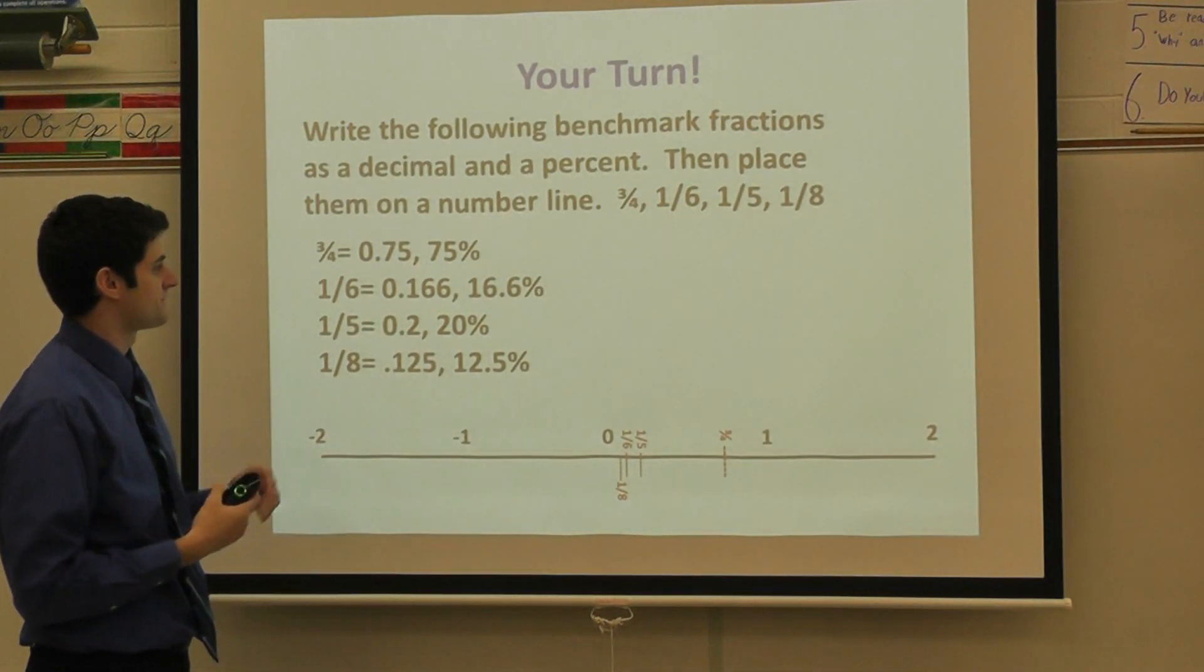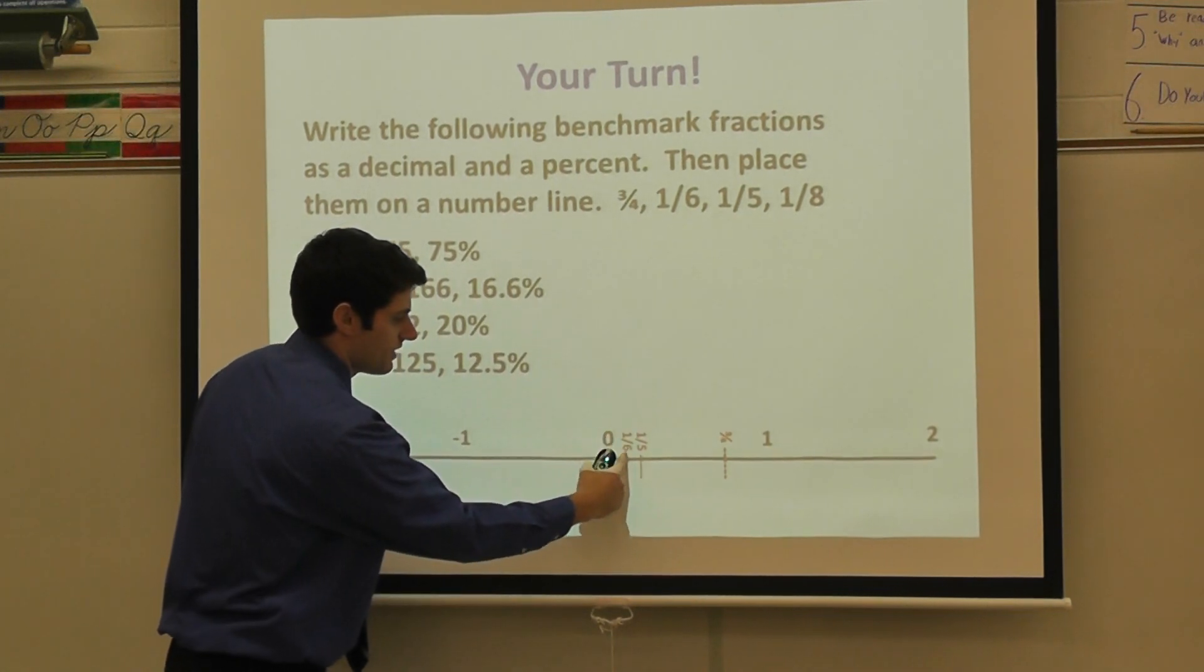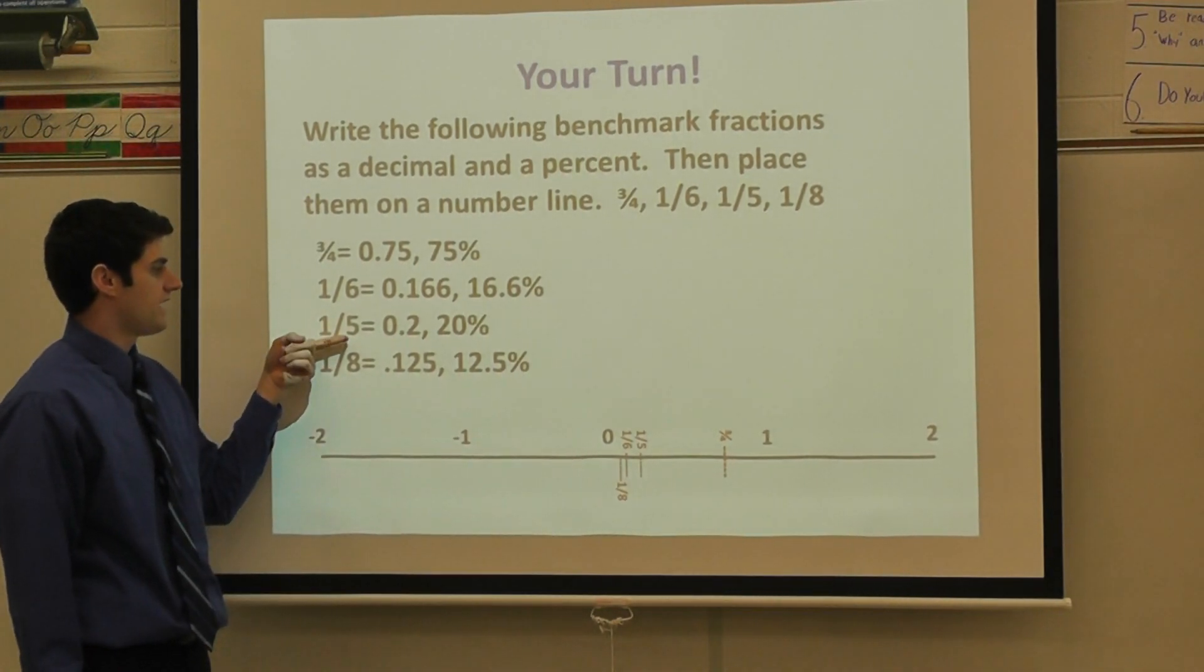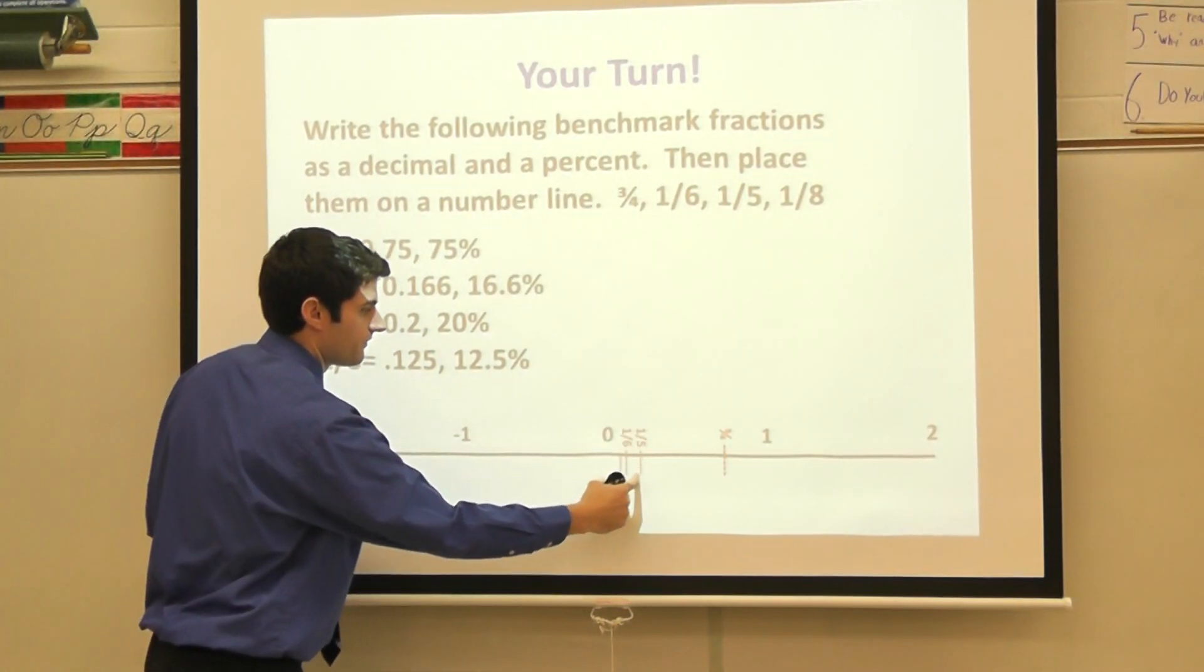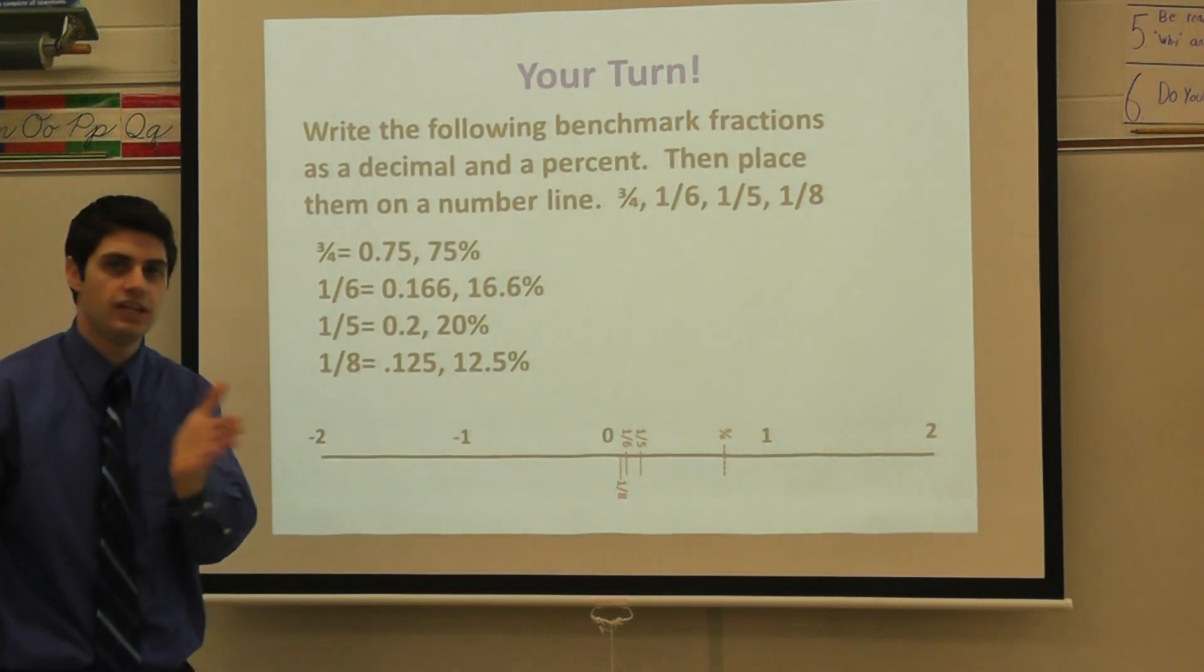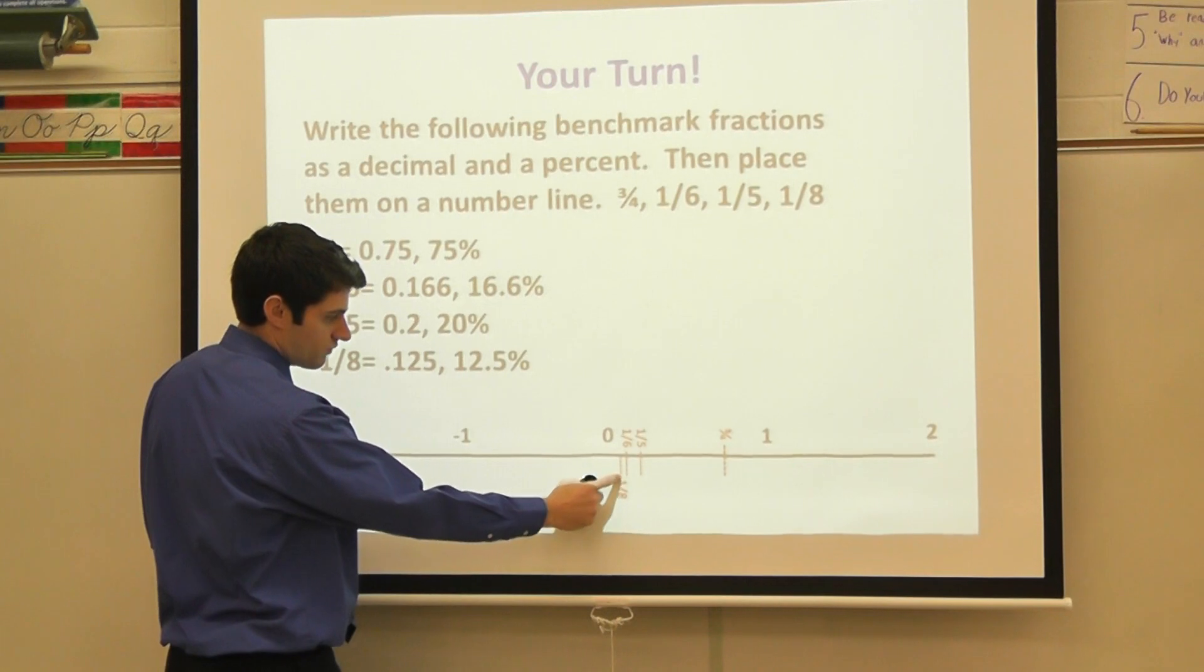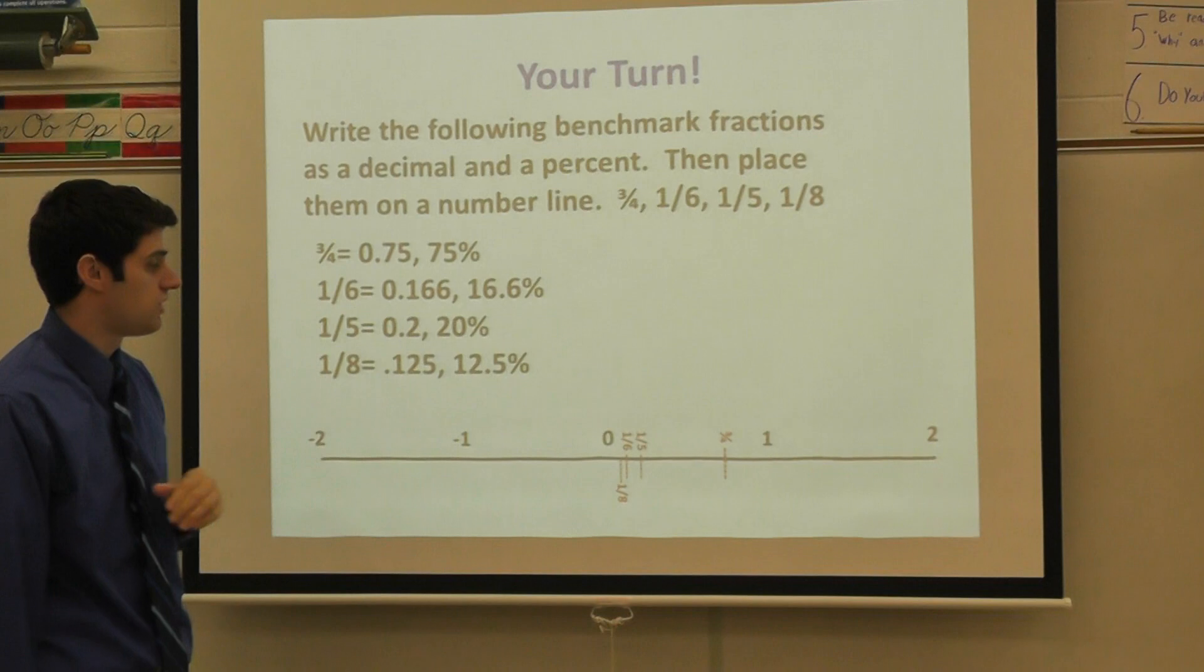1 sixth is 16.6 percent. I'd also have to break this up into six equal parts. So I might place 1 sixth right about there, a little bit farther off of zero. When looking at fifths, I need to break it up into five equal parts. So 1 fifth might fall here. Again, I know that 5 fifths would be a whole, and I can make five equal lines or as close to possible as I can. And then lastly, 1 eighth is 12.5 percent. So I'm going to place 1 eighth right about here. I can break this up into eight equal parts.